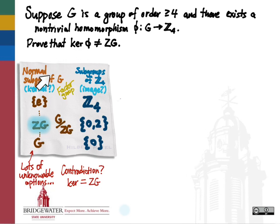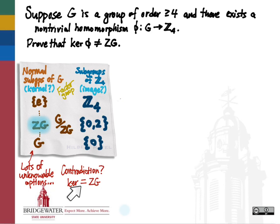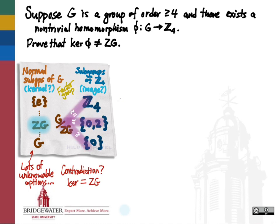It's probably going to be easier to negate the conclusion and set ourselves up for an indirect proof, rather than thinking about all possible normal subgroups of g. So let's assume that the kernel of our homomorphism is exactly equal to the center of g. If that's the case, then the factor group of g by its kernel is exactly g mod the center of g. The first isomorphism theorem then says this factor group must be isomorphic to the image of phi, which must be one of those three subgroups of Z mod 4.